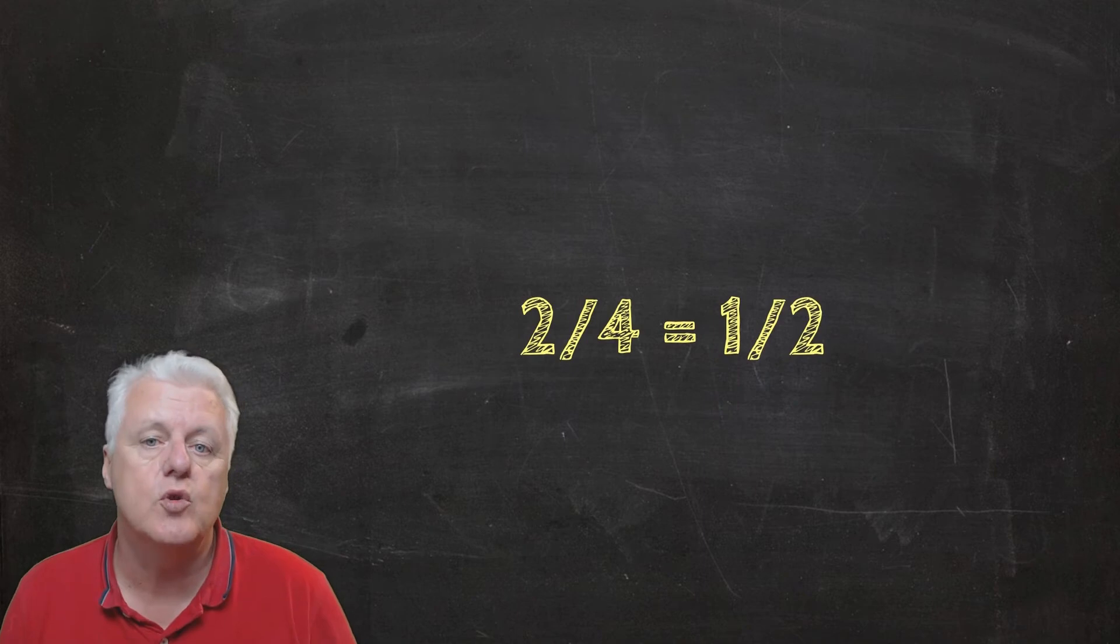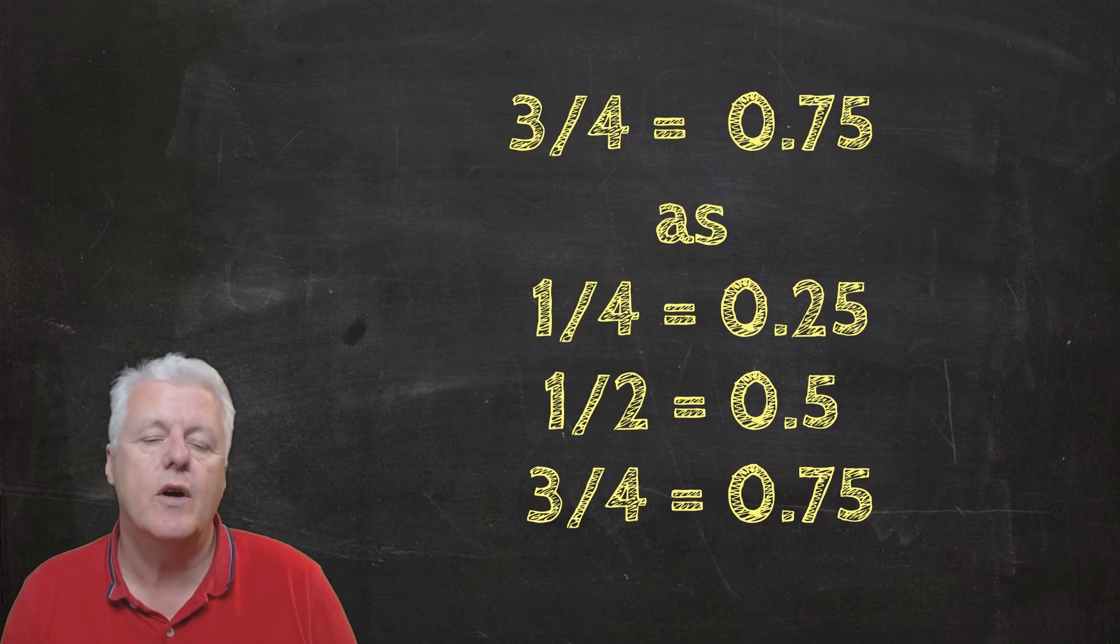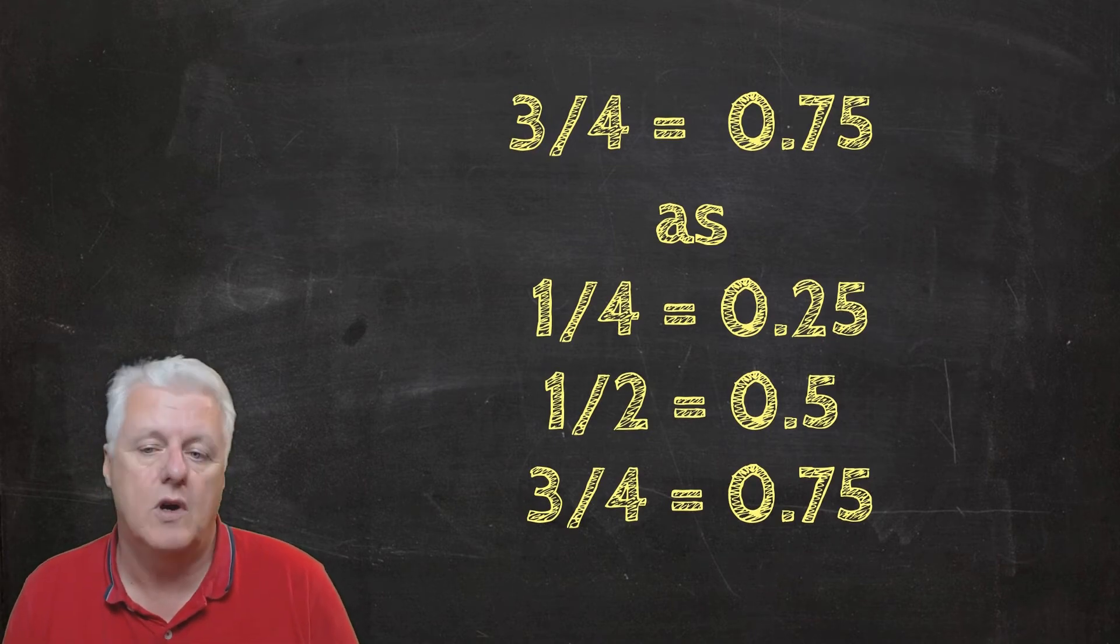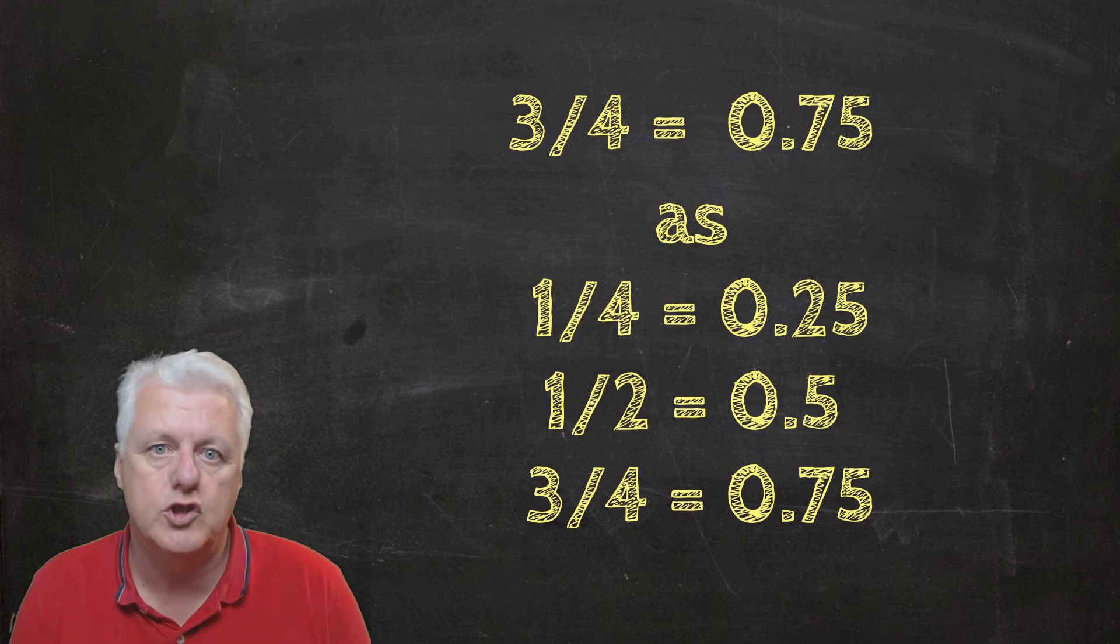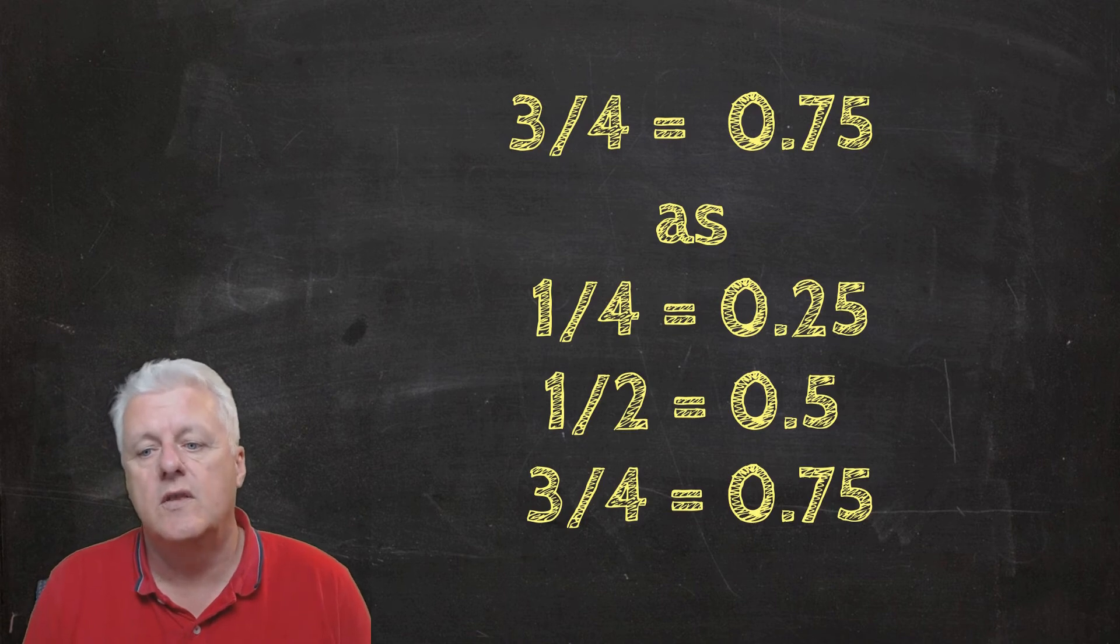Remember that two quarters equals one half, so three quarters equals 0.75. Because one quarter equals 0.25, one half which is two quarters equals 0.5, and three quarters therefore equals 0.75.